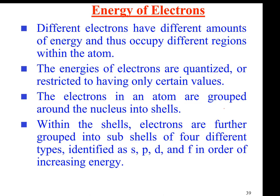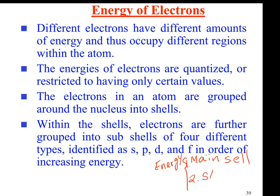What contributes to the energy of an electron are two factors. Number one, when we talk about energy of electrons, the first factor is the main energy shell, denoted as N. And the second factor is the type of orbital, or shape of the electron cloud. The S orbital has less energy than P, which has less energy than D, which has less energy than F.